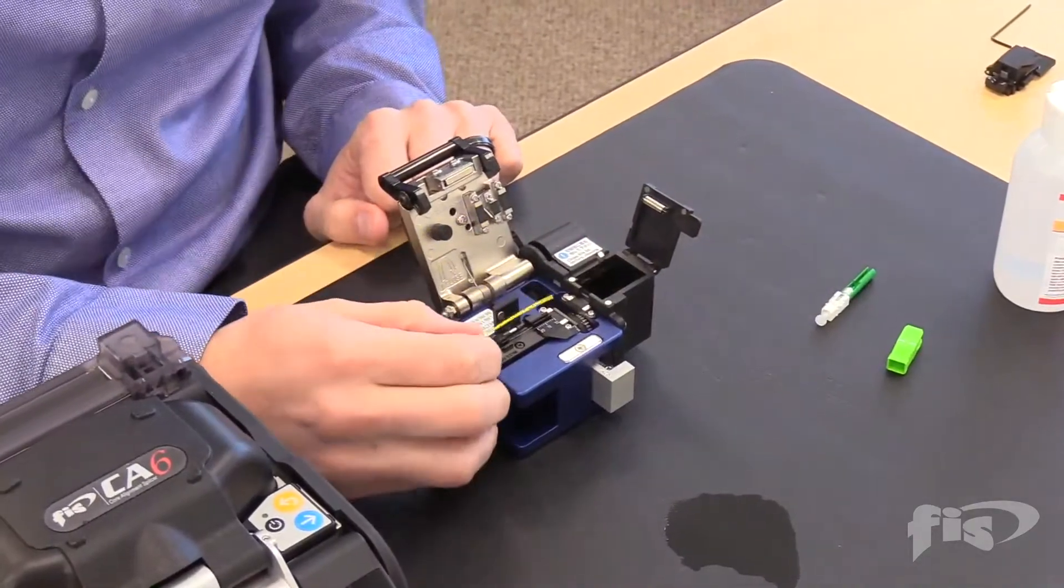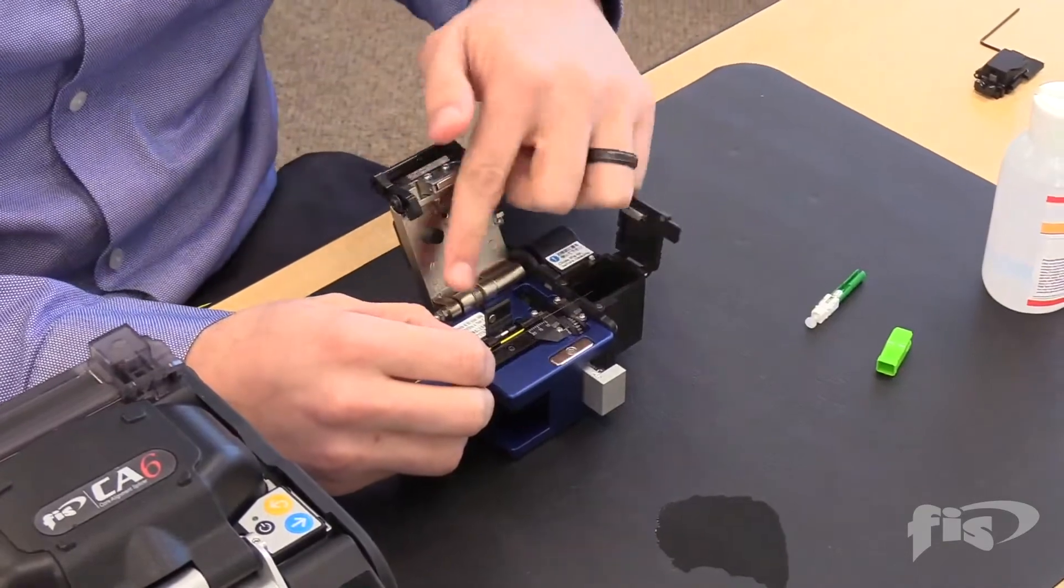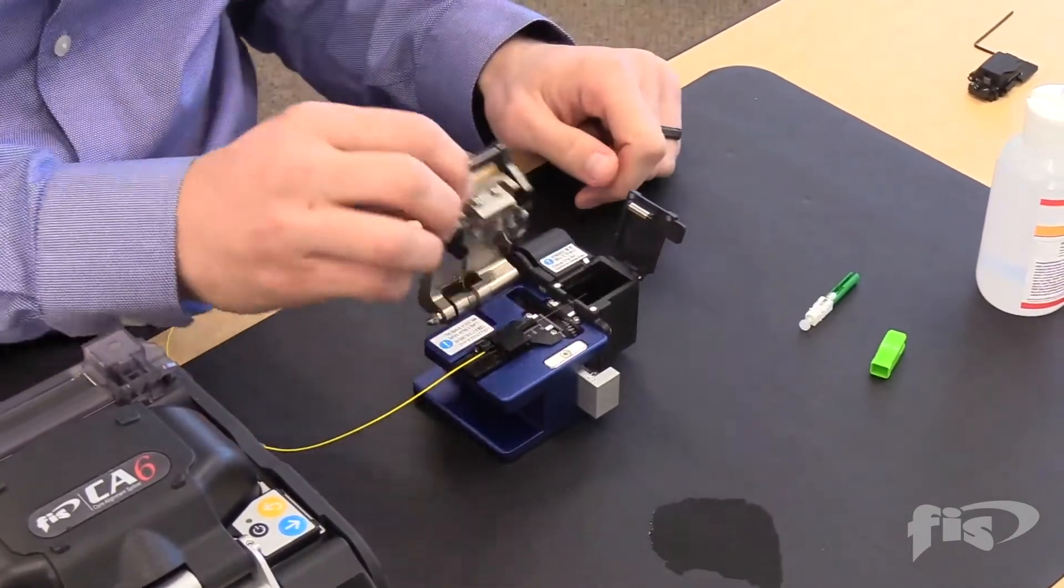Take the cleaver and place the fiber into the groove until the buffer is at 10mm. Then cleave.